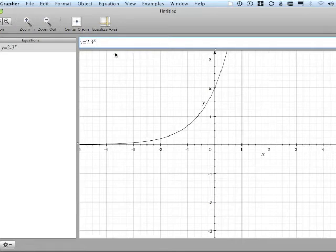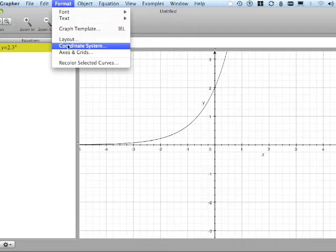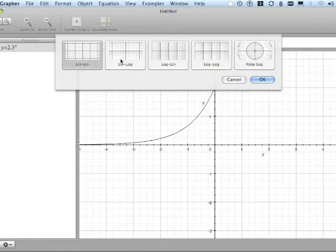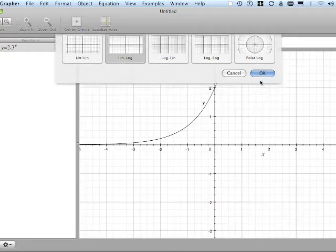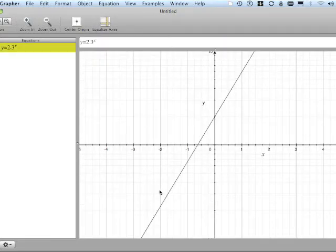If we go and change the coordinate system from Format, Coordinate System, what we know or should know is that if I change to linear-log, I will get a straight line from an exponential equation. Click on linear-log, click on OK.